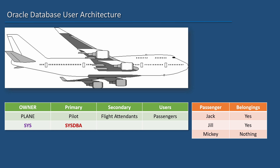Then, who is the pilot? Remember, pilot is not the name of a person — it's a privilege. We may have a pilot for today's flight and another one as the pilot for tomorrow's flight of the same plane. So pilot is a privilege. The equivalent of it in Oracle Database is the SysDBA privilege.